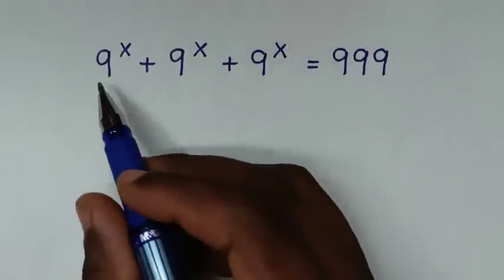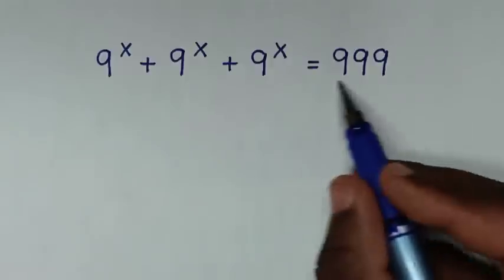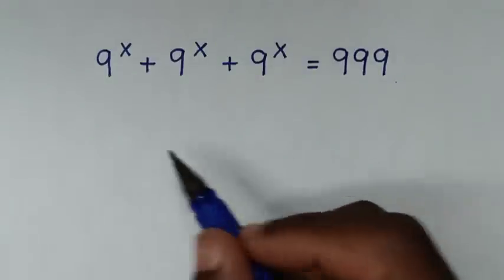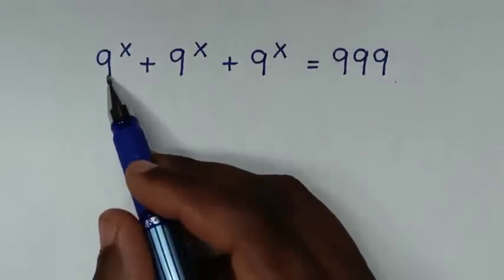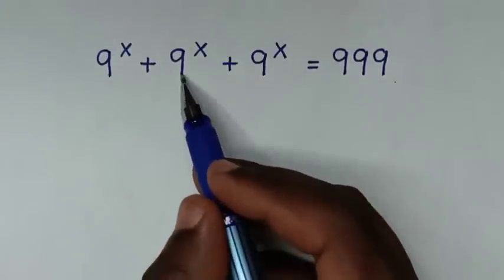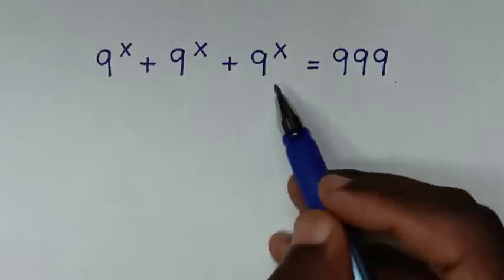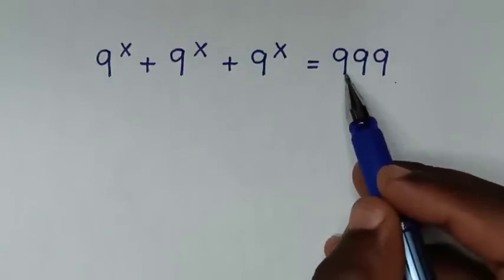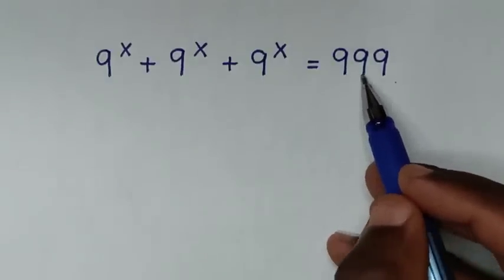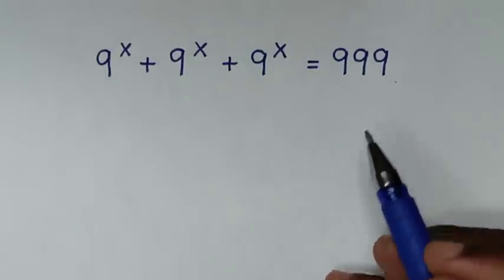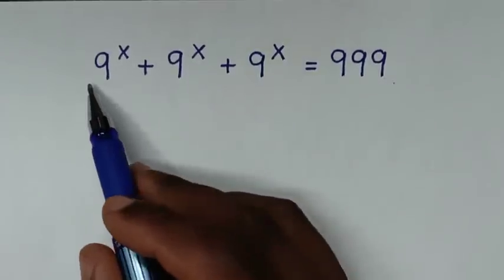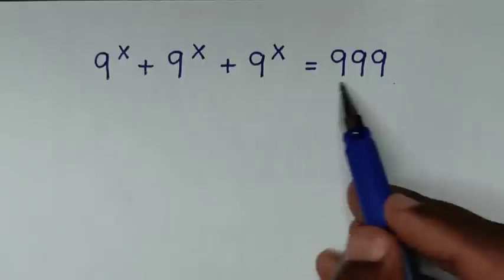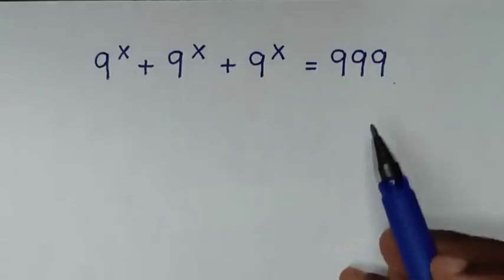Hello, you are welcome to solve this math problem which is 9 power x plus 9 power x plus 9 power x is equals to 999, to find the value of x from this equation.